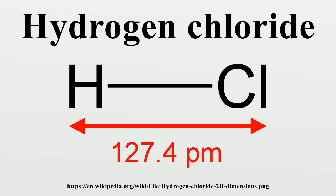The acetylene process used until the 1960s for making chloroprene starts by joining two acetylene molecules, then adding hydrogen chloride to the joined intermediate across the triple bond to convert it to chloroprene. This acetylene process has been replaced by a process which adds Cl2 to one of the double bonds in 1,3-butadiene instead, and subsequent elimination produces hydrogen chloride as well as chloroprene.